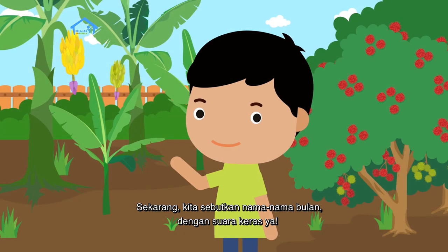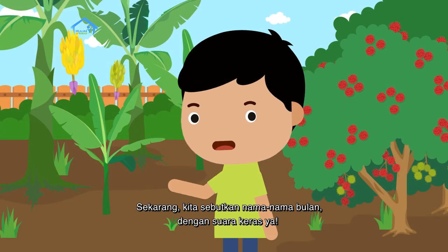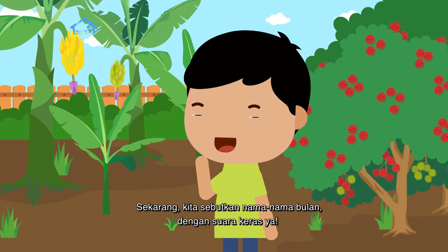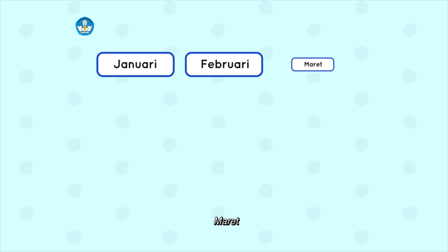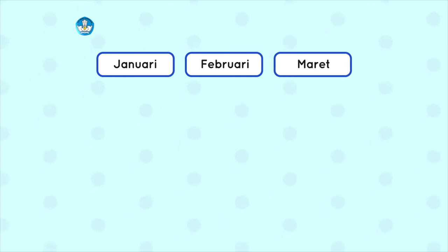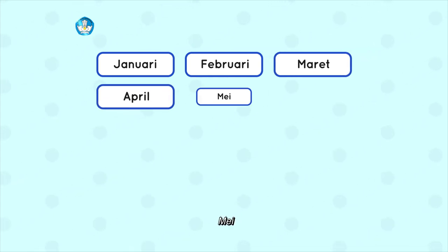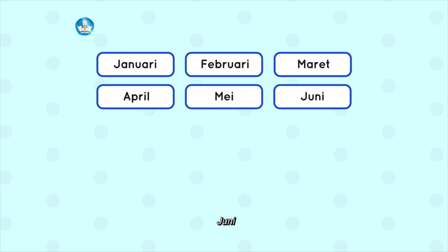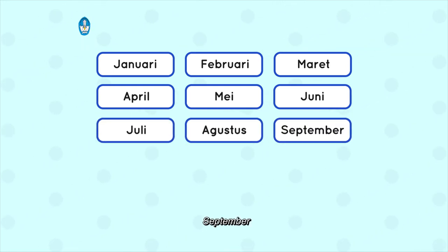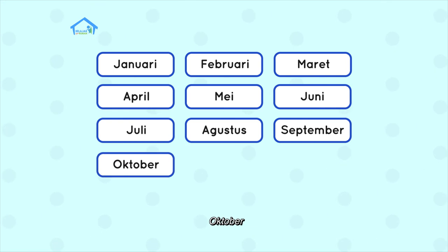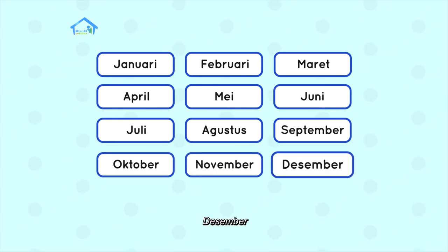Sekarang kita sebutkan nama-nama bulan dengan suara keras ya. Januari, Februari, Maret, April, Mei, Juni, Juli, Agustus, September, Oktober, November, Desember.